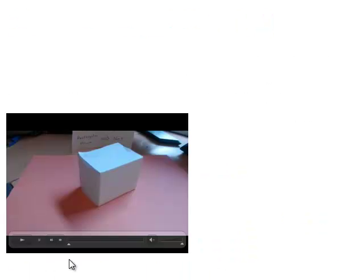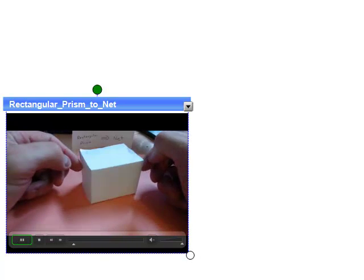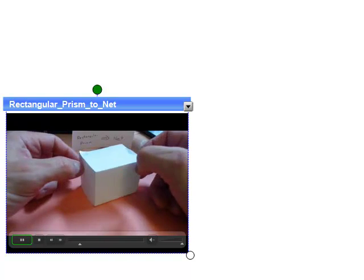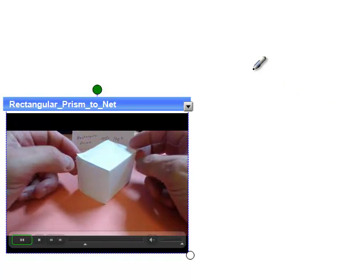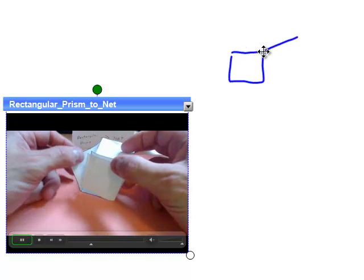The first thing we're doing is visualizing isometric drawings, an isometric image, and we're placing it into a net. So I'm going to first sketch an isometric of this right rectangular prism.